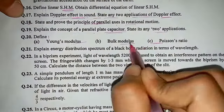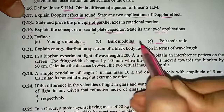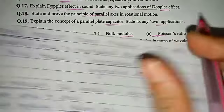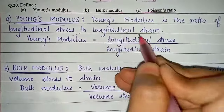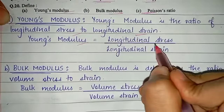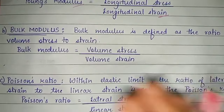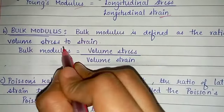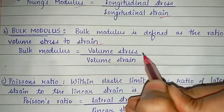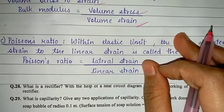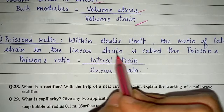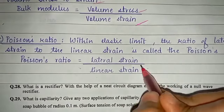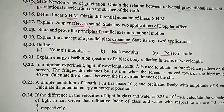Question number 20: define Young's modulus, bulk modulus, and Poisson's ratio. Young's modulus: ratio of longitudinal stress to longitudinal strain. Bulk modulus: ratio of volume stress to volume strain. Poisson's ratio: within elastic limit, the ratio of lateral strain to linear strain.